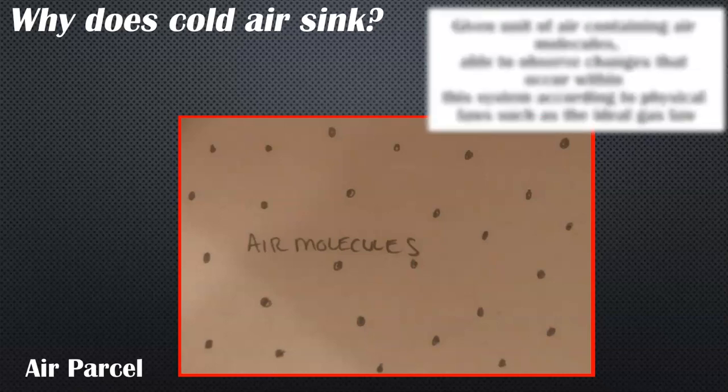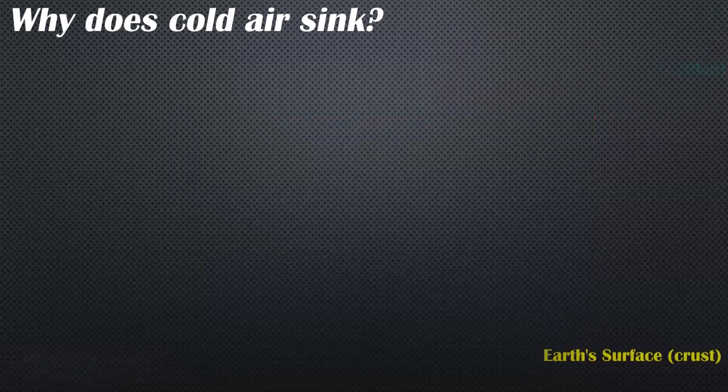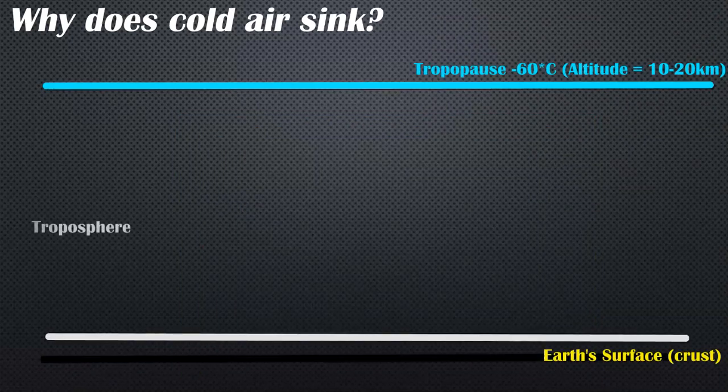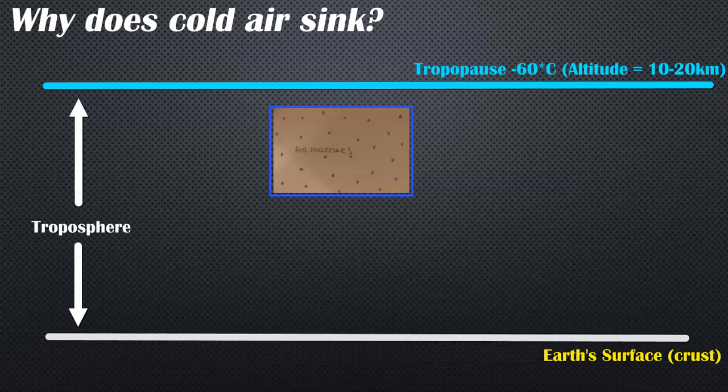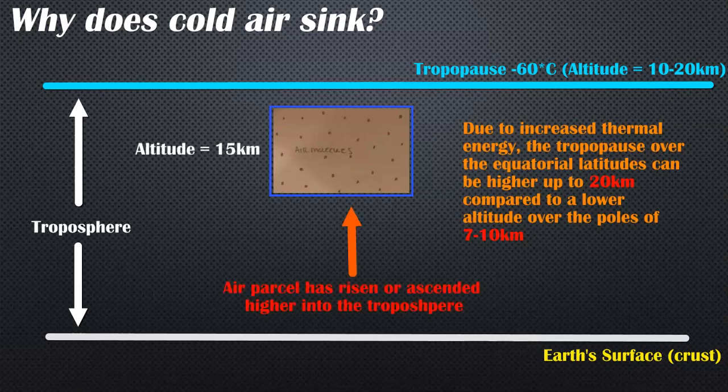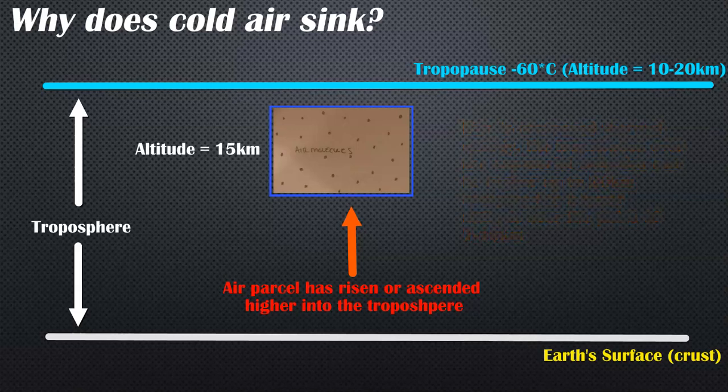pressure, and various other parameters. This air parcel is towards the top of the troposphere, towards the tropopause, which could be a range of altitudes depending on latitude. Let's say it's 15 kilometers above the surface. This air has risen, has ascended due to hot air rising, which is a video I've done in this playlist.